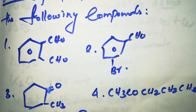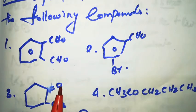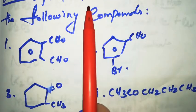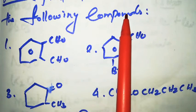Today's topic is the chemical properties of aldehyde and ketone. Before that, let's review yesterday's homework: find the IUPAC name of the following compounds.